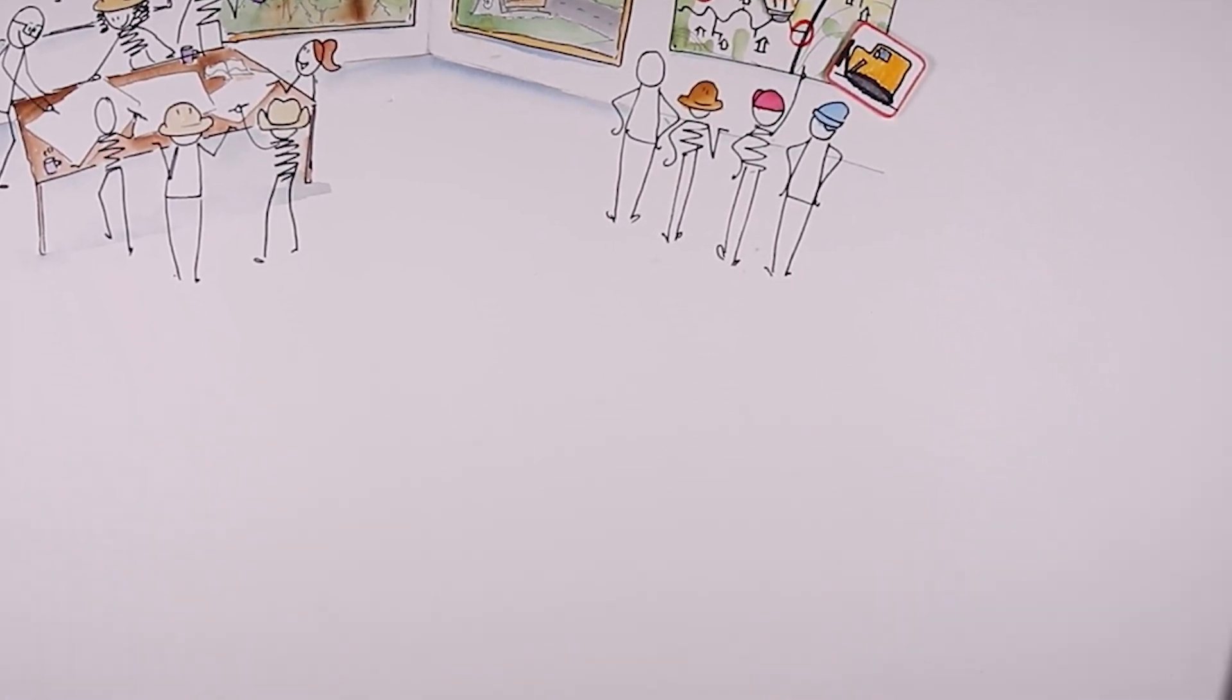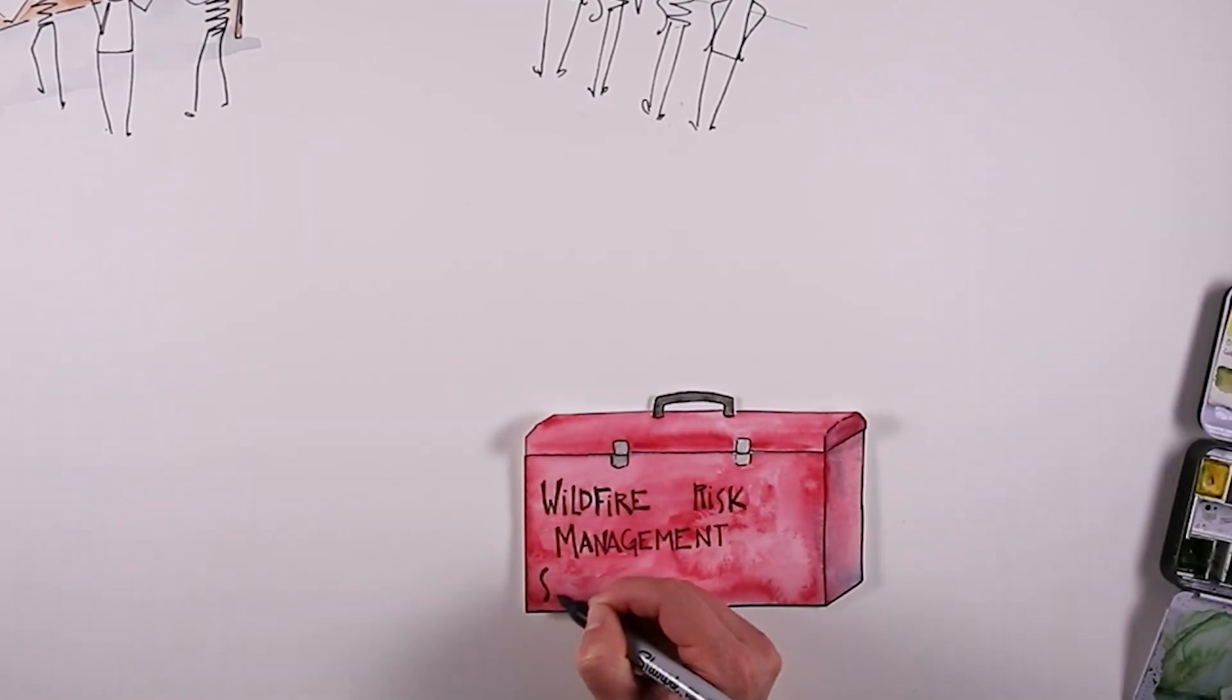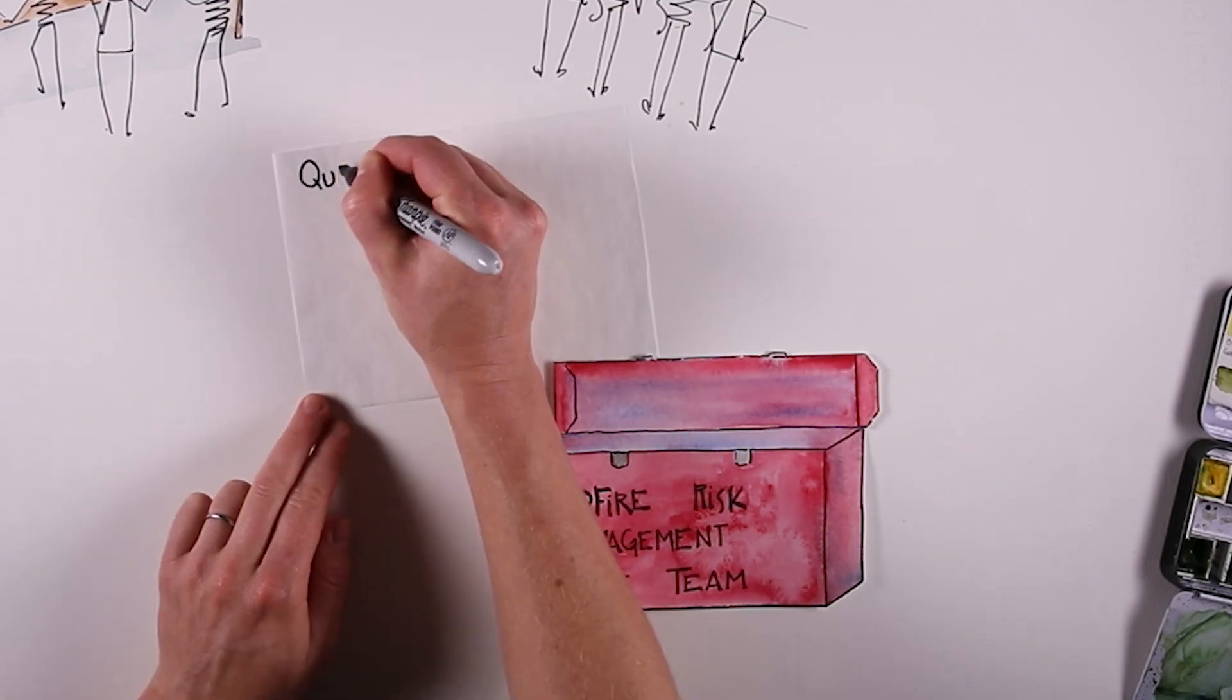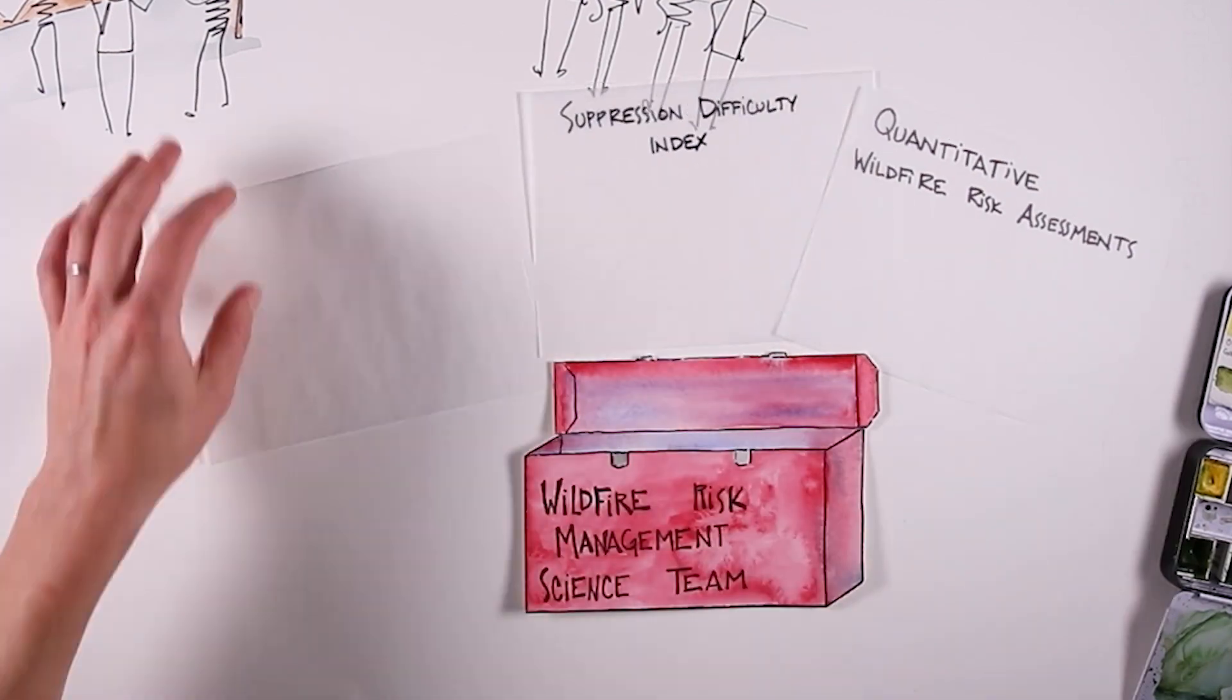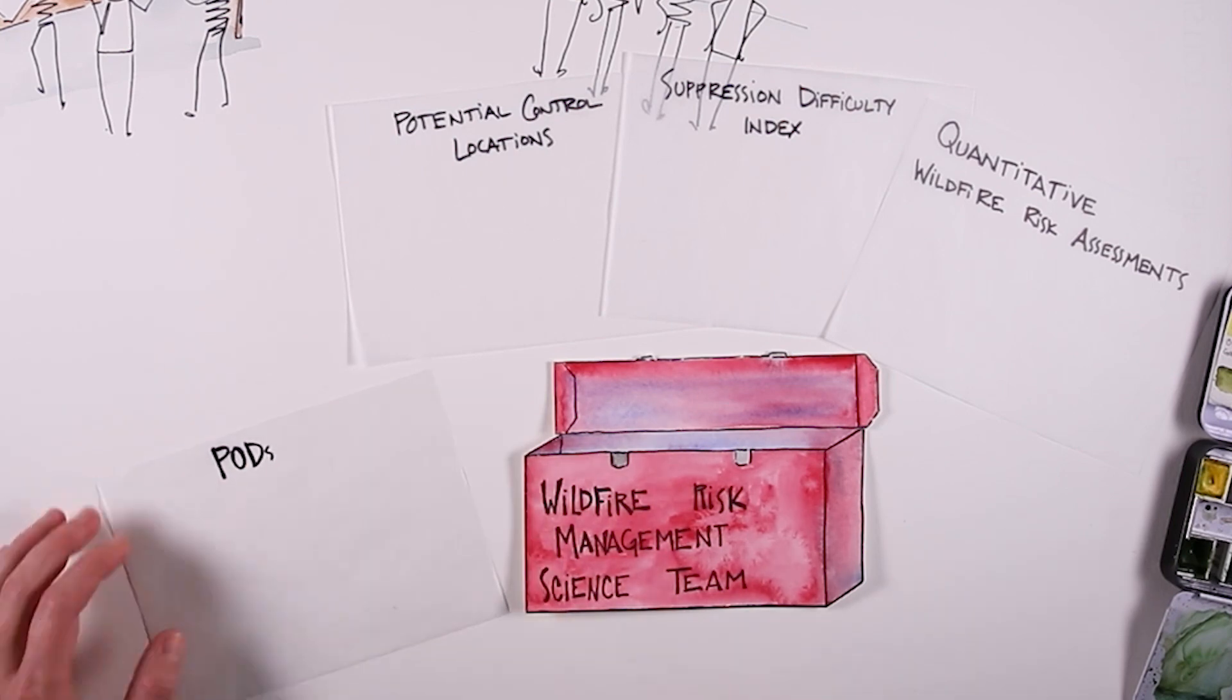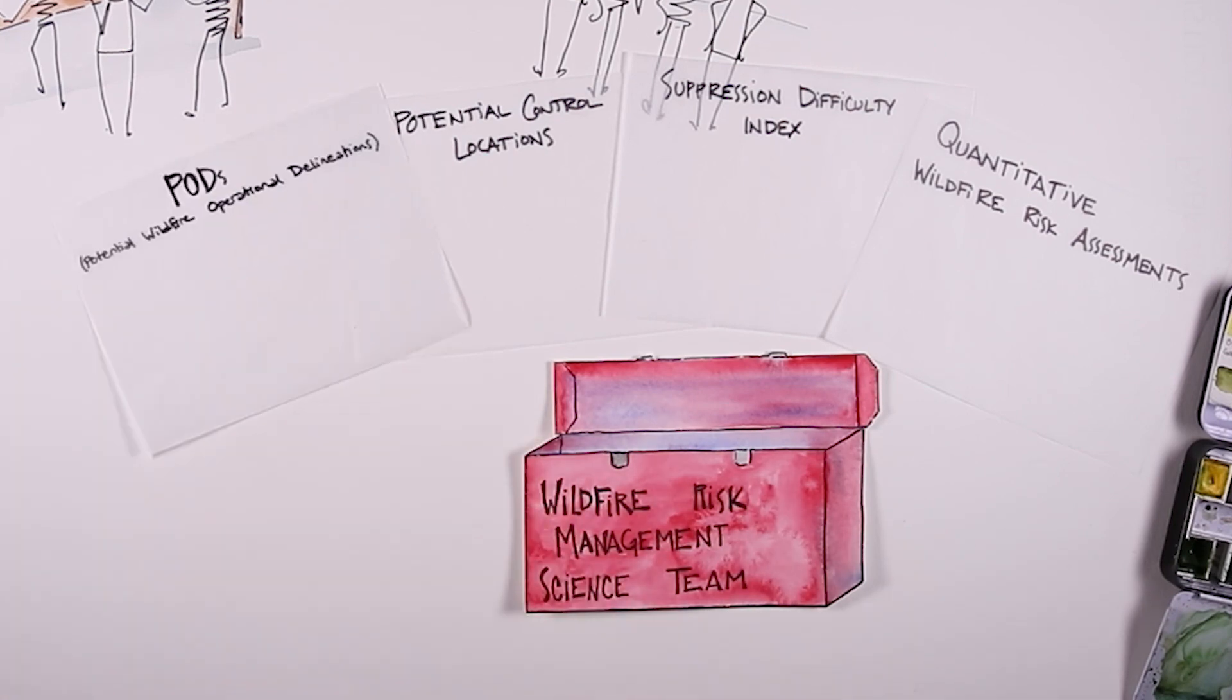The science team brings several tools to the table for this effort. The basic ingredients of these tools are intuitive and designed to complement local expertise and judgment: the quantitative risk assessment and potential control locations that help form potential wildfire operational delineations, also known as PODs.